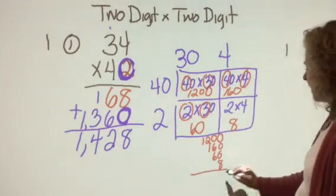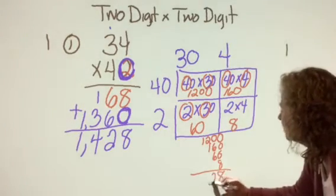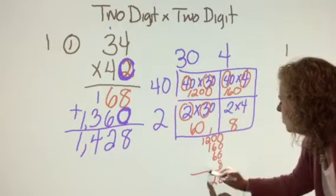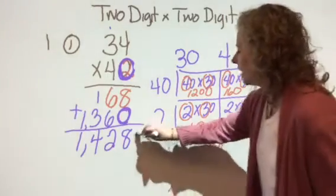You're going to get 1,428. Can you see that? 6 plus 6 is 12. I'm going to put down my 2. Carry my 1, bring it over, and bring down that 1. Boys and girls, look. It's magic.